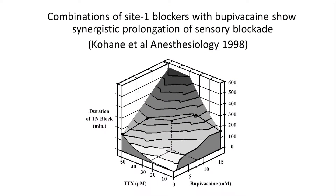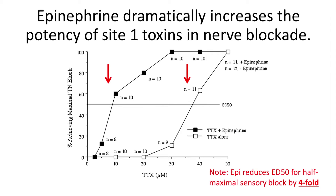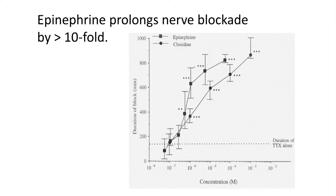Early on we looked at some of the existing site-1 blockers and showed that combinations with existing local anesthetics were incredibly synergistic. On the Z axis is duration of numbness to a thermal stimulus. We showed that combining a site-1 blocker with bupivacaine — the standard — gives incredibly synergistic prolongation of action. We also showed that epinephrine, the vasoconstrictor, left-shifts the dose-response curve considerably, allowing efficacy with much smaller doses, and produced a profound prolongation of blockade — up to 10-fold for alpha agonists, compared to about 20–30% for bupivacaine alone.